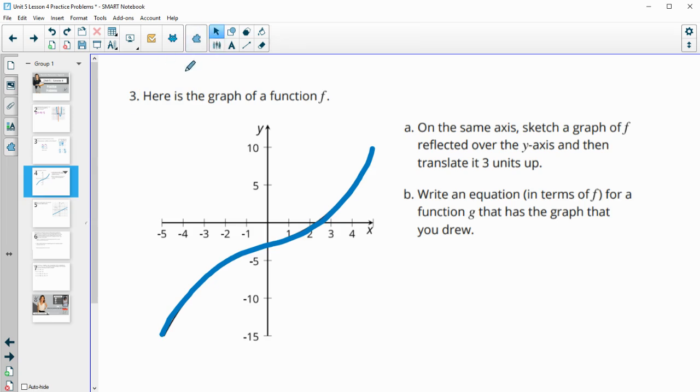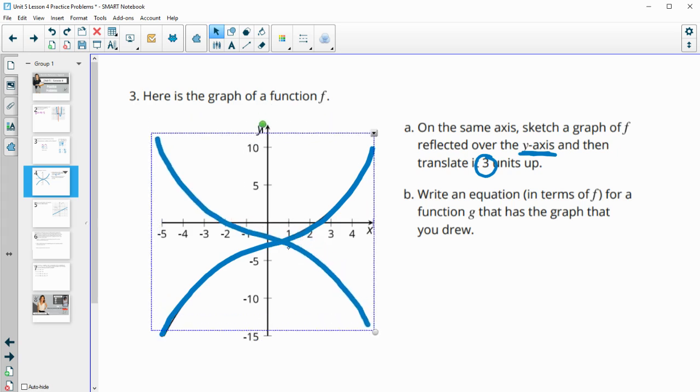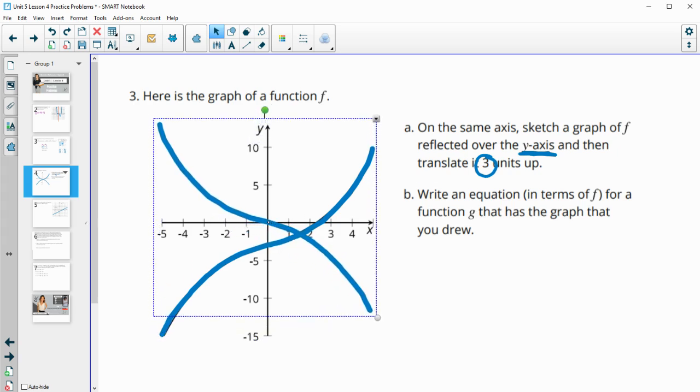Number three, we have the graph of function f. Part a says on the same axis sketch the graph of f of x reflected over the y-axis then up three. So if we're going to flip this over the y-axis I'm just going to duplicate this. So we'll flip it over the y-axis which means left and right. So we'll switch it over the y-axis. It's going to keep this point in the same spot and then we want to move up three. So this looks like it's maybe down about three or maybe 2.5, but so that point is going to just move up about three.